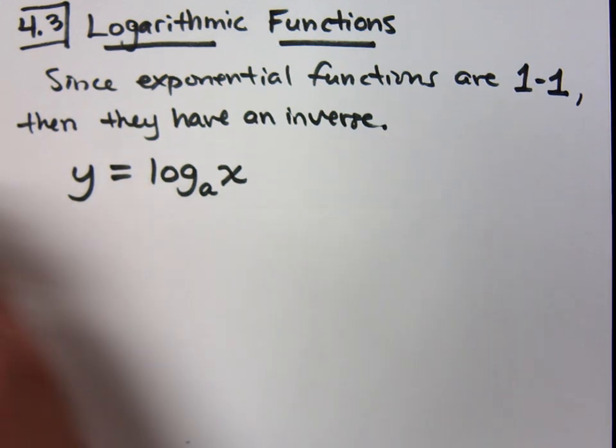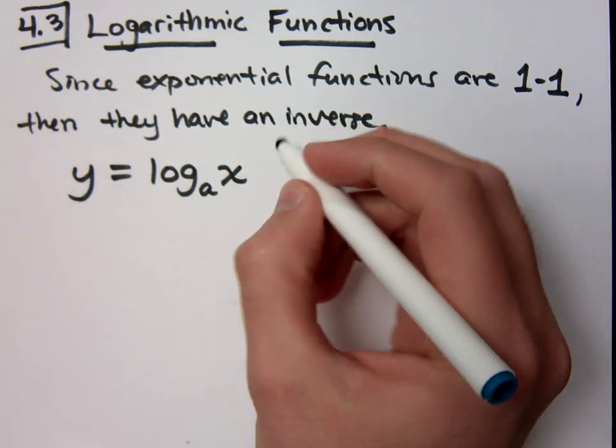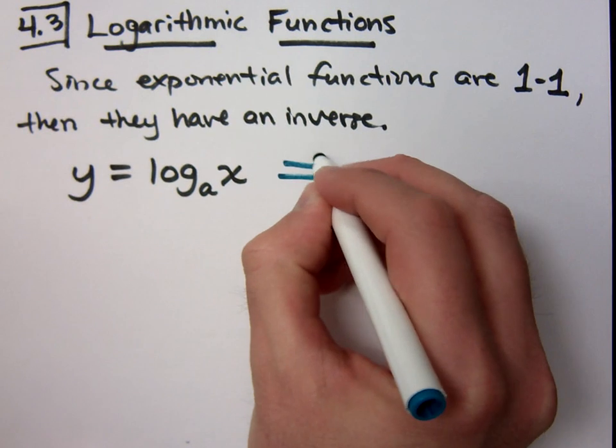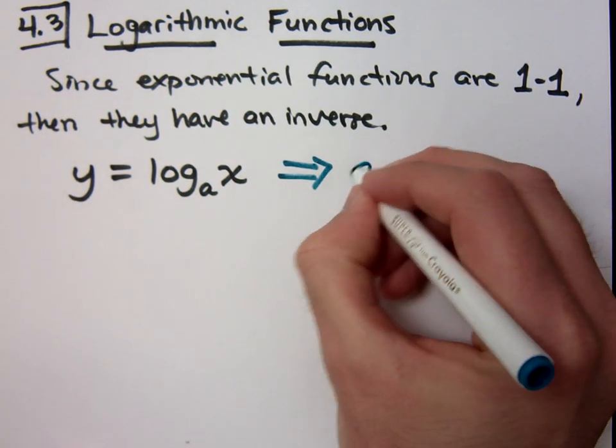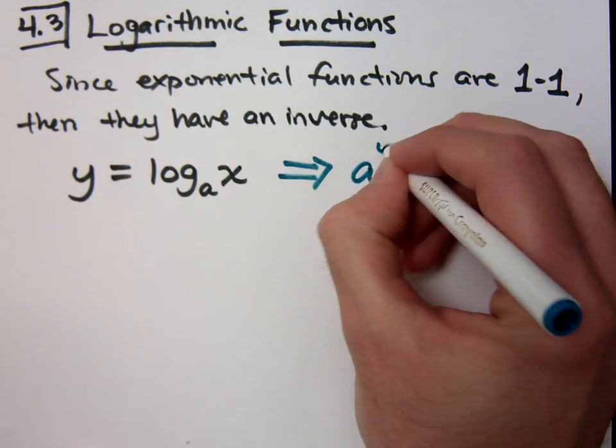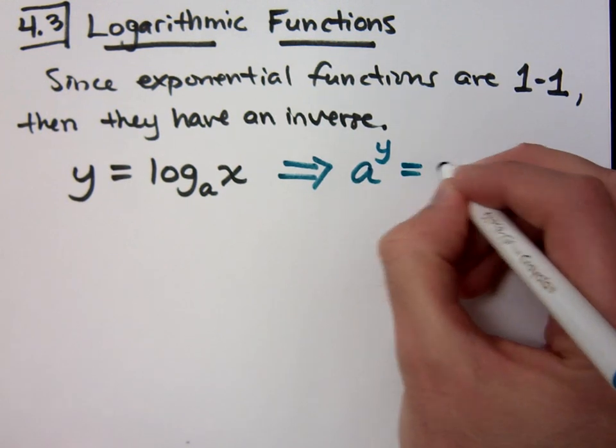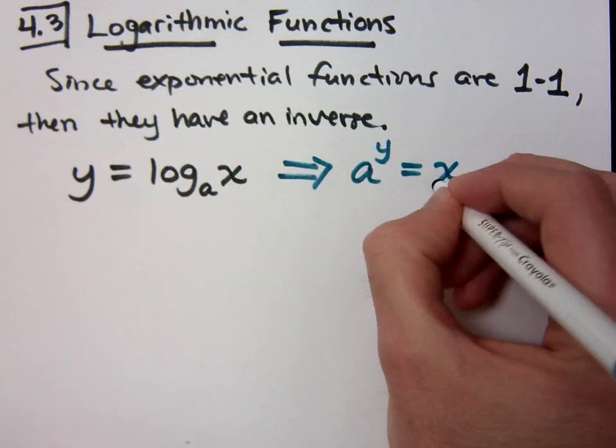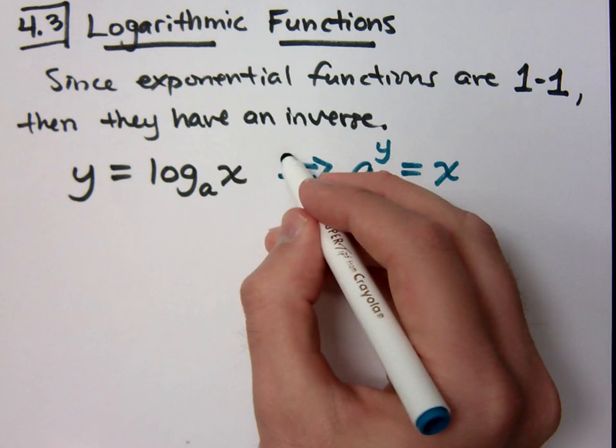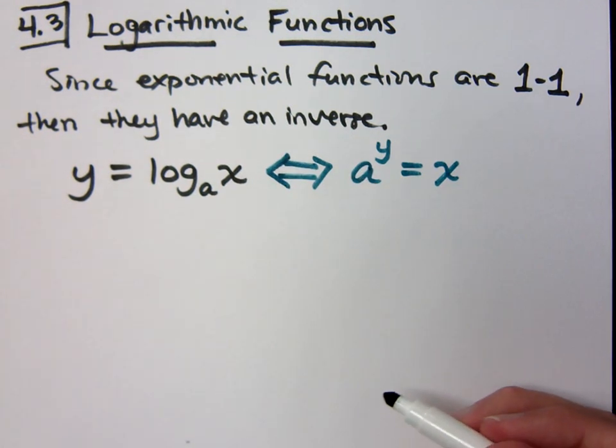Now, when you see this, we have to make sure we understand the connection here. This means that a to the y power equals x. This goes back and forth in terms of the meaning here.